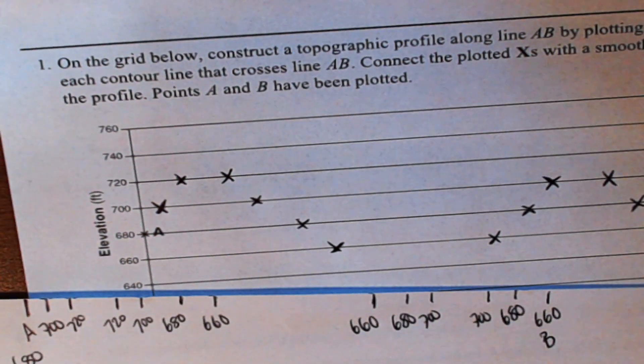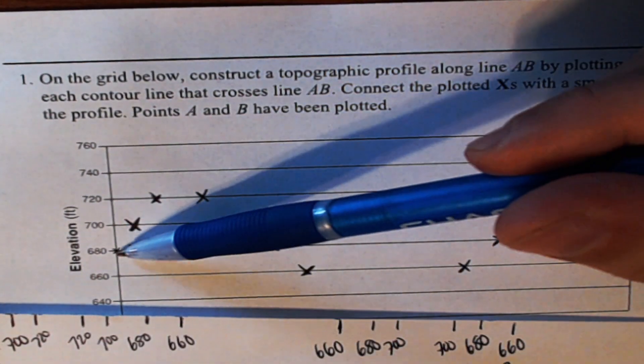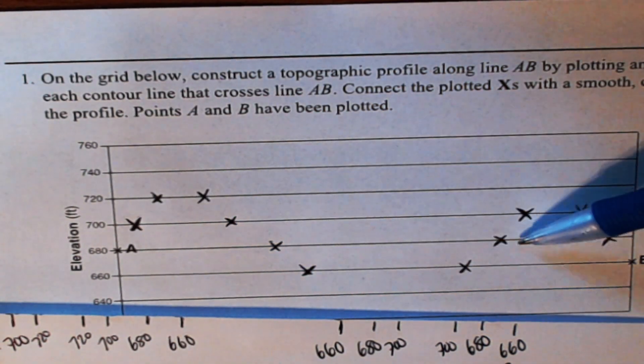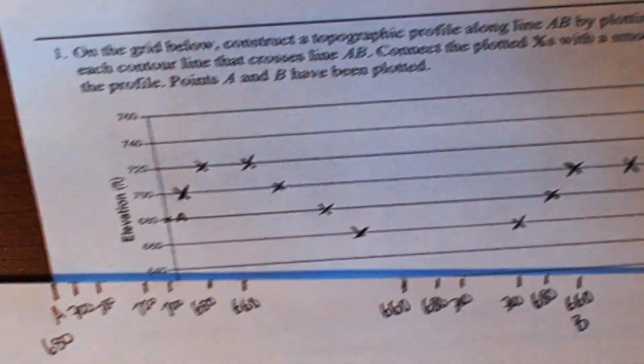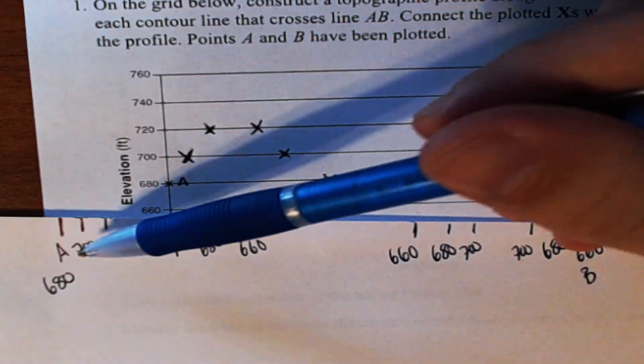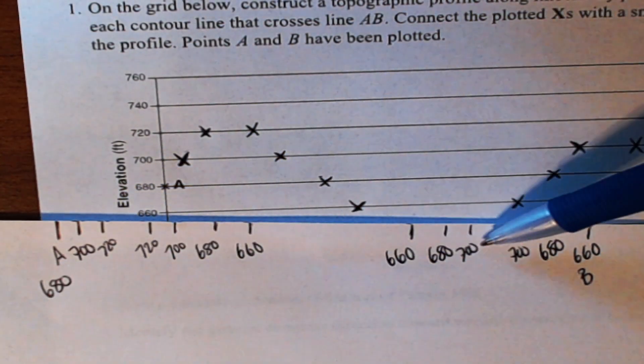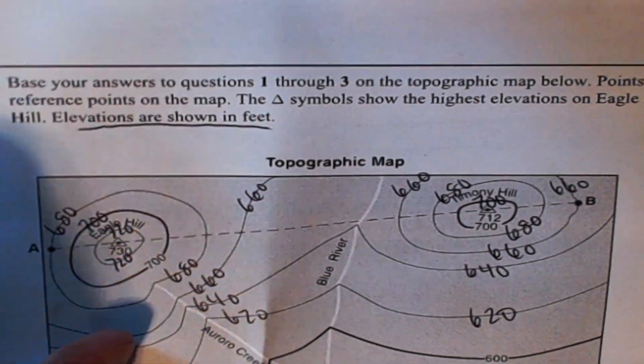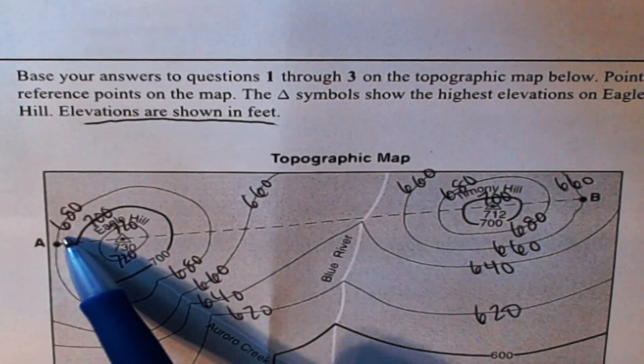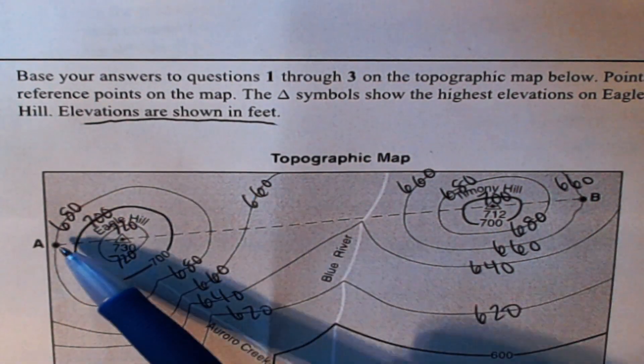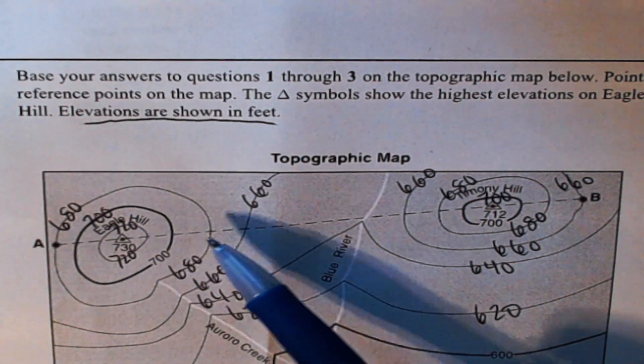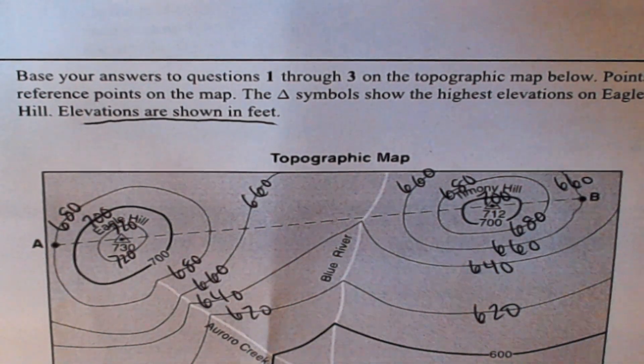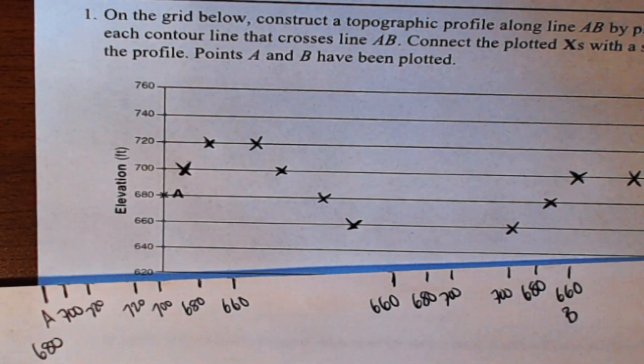So to make sure I did this right I'm going to count all my X's right now ready, including the ones they plotted: 1, 2, 3, 4, 5, 6, 7, 8, 9, 10, 11, 12, 13. So now I'm going to count my lines on my paper: 1, 2, 3, 4, 5, 6, 7, 8, 9, 10, 11, 12, 13. I match. Now go back to the original map, count all the lines that cross the dotted line: 1, 2, 3, 4, 5, 6, 7, 8, 9, 10, 11, 12, 13. Everything matches, so that means I did not miss anything.